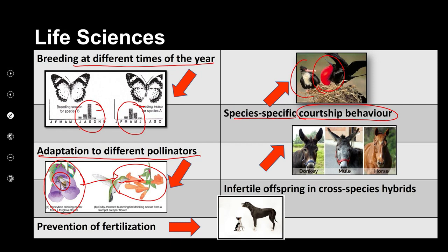A fourth mechanism involves infertile hybrids. A horse and a donkey can crossbreed, but the offspring — a mule — is infertile. So a new species is not formed since the mule cannot reproduce. The last mechanism is prevention of fertilisation, related to copulatory organs — for example, a very large dog would not be able to mate with a very small dog. Also, gametes may not be compatible for fertilisation to take place.